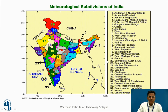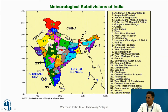The regions are further subdivided into meteorological subdivisions, which are numbered. For example, subdivision 1 is Andaman, 2 is Arunachal Pradesh, 14 is Punjab, and 15 is Himachal Pradesh. These are the meteorological subdivisions of India.